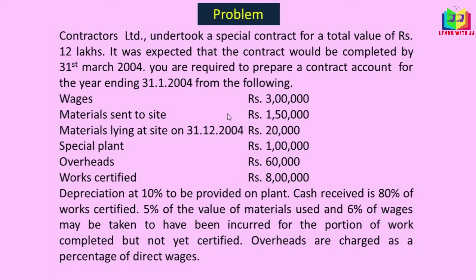The information relating to works uncertified is: 5% of the value of materials used and 6% of wages may be taken to have been incurred for the portion of work completed but not yet certified. Overheads are charged as a percentage of direct wages. Now we'll start doing the problem and you will come to know how to calculate works uncertified.